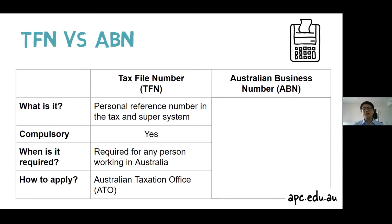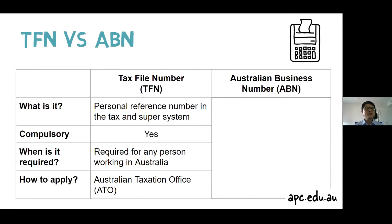To get the Tax File Number, the application is very straightforward. Just go to the Australian Taxation Office — ATO's — website and make an online application. You meet the conditions for online application because you are a foreign passport holder with an international student visa, which is an eligible visa, and you are in Australia. Within 28 days after you lodge your application, the Tax File Number will be posted to your Australian address as mentioned in the form. Please make sure to keep it in a safe place.